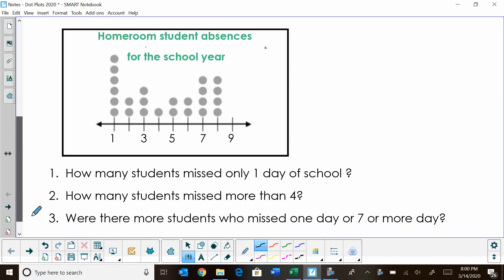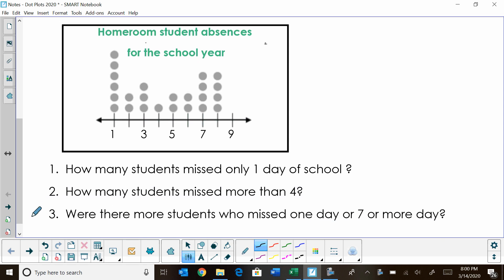So here is a dot plot. Let's read the title to see what the dots represent. Dots represent homeroom students' absences for the year. On the bottom we have a scale running one to nine. Notice that there's a one, a three, a five, a seven, and a nine. So in between that must represent two, four, six, and eight.